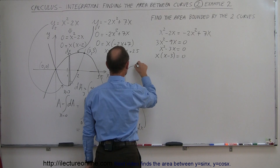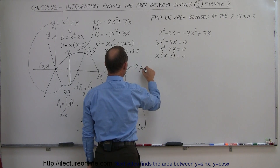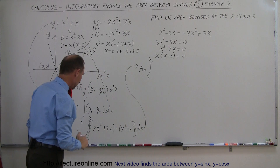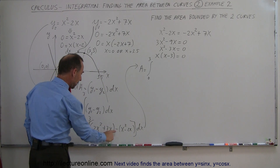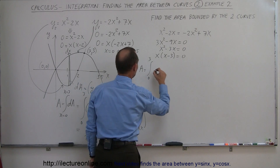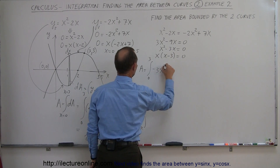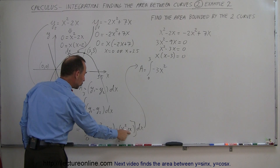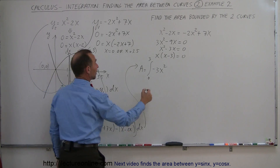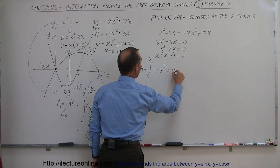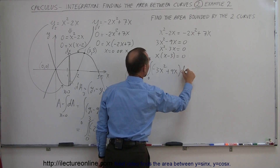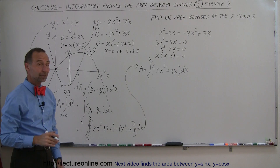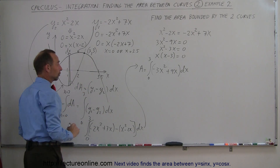Now we combine like terms under the integral. The area equals the integral from 0 to 3 of: minus 2x squared minus x squared gives minus 3x squared, and 7x minus (minus 2x) gives plus 9x. So the integral becomes the integral from 0 to 3 of (minus 3x squared plus 9x) dx. Now we're ready to evaluate that integral, which will give us the area bounded by these two curves.